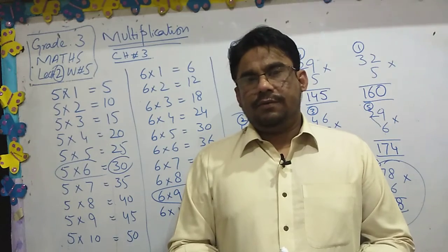Next, 5 times 6 equals 30. 5 times 6 equals 30. So 30, what do we do? 0 we write, 3 we carry.